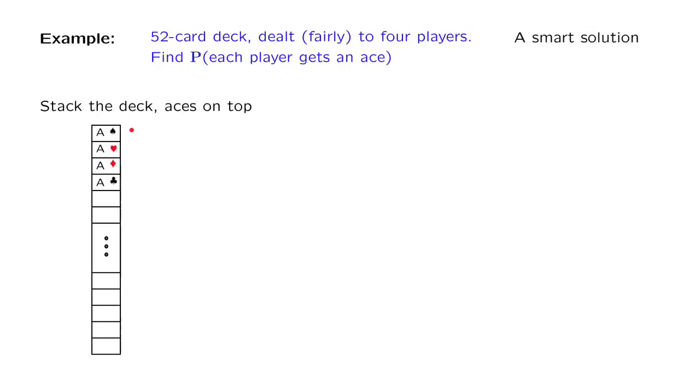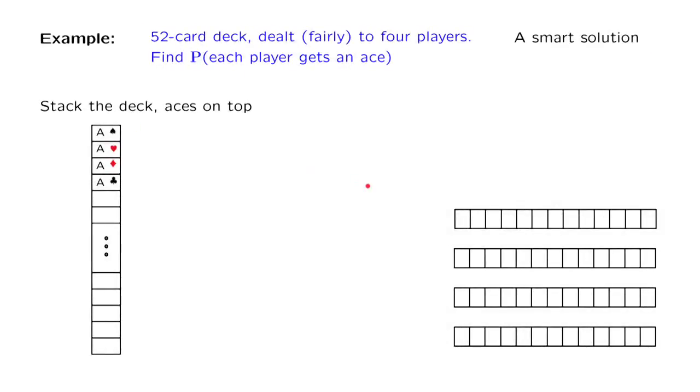So the aces are first. And then we deal those cards to the players as follows. We think of each player having 13 slots of his own, and the cards will be placed randomly into the different slots. So we can do this one card at a time, starting from the top. We take the first ace and send it to a random location.